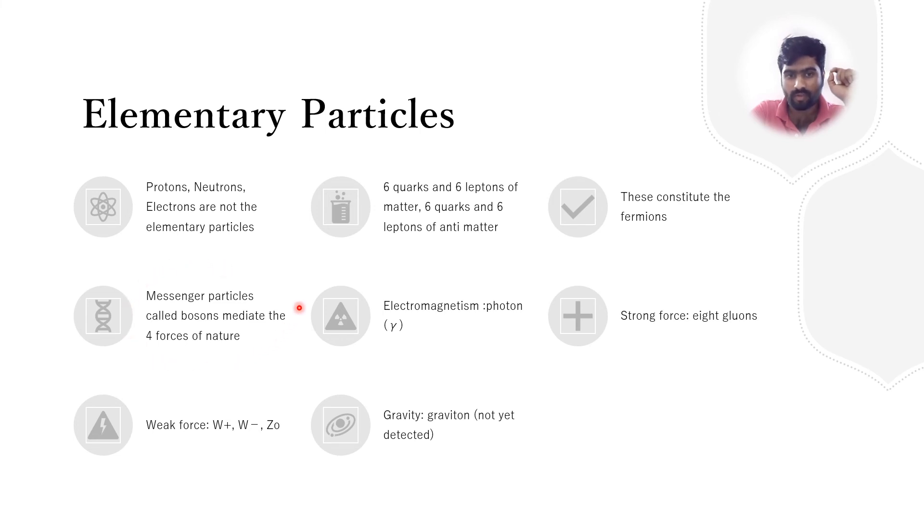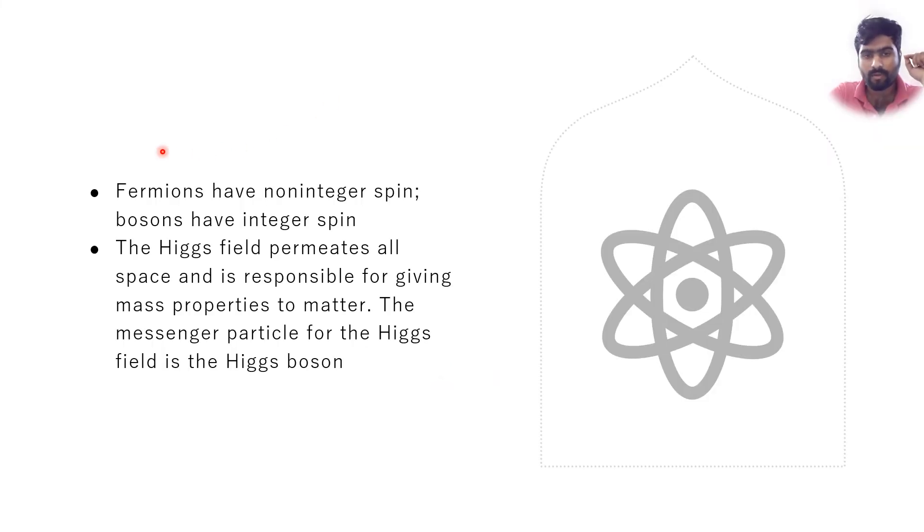Now coming to another particle known as the bosons. The bosons are the carriers of energy in the field. They mediate the four forces of nature. These are known as messenger particles. What are the four forces of nature? Electromagnetism, that is photon. Strong force, eight gluons. Weak force, W plus, W minus, and Z naught. For gravity, it's graviton. Graviton is the only thing which is not yet detected. The difference between fermions and bosons is their spin. Fermions have non-integer spin like one-half. Bosons have integer spin like one or four. Now we are coming to another important concept called the Higgs field. The Higgs field permeates all space and is responsible for giving mass properties to matter in the universe. The messenger particle for this Higgs field is called the Higgs boson.